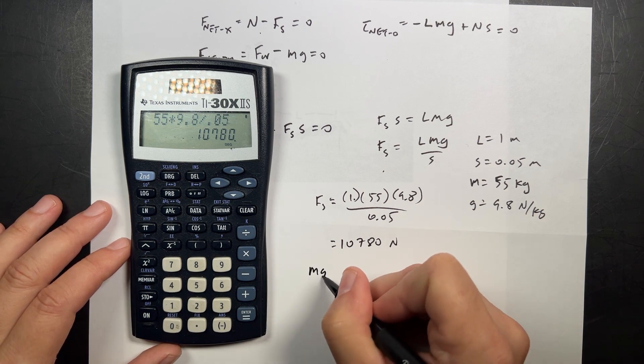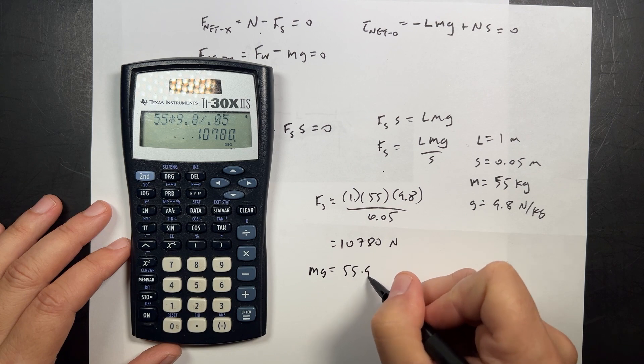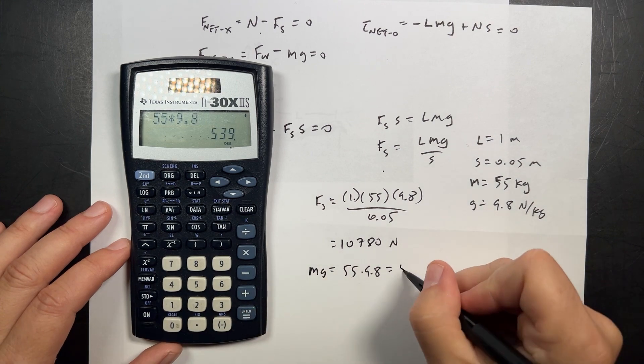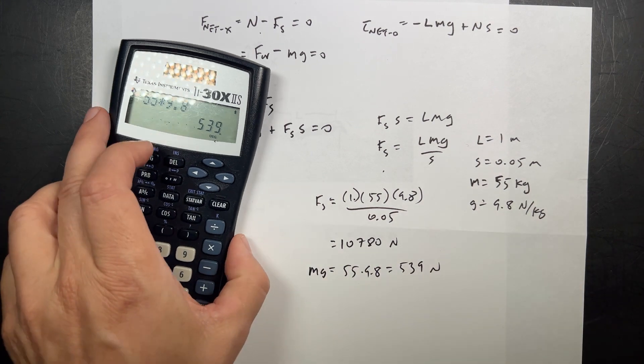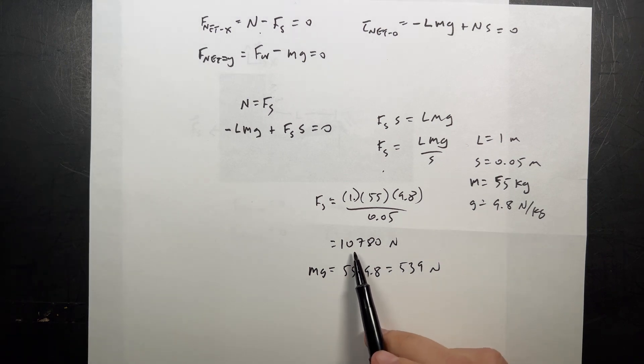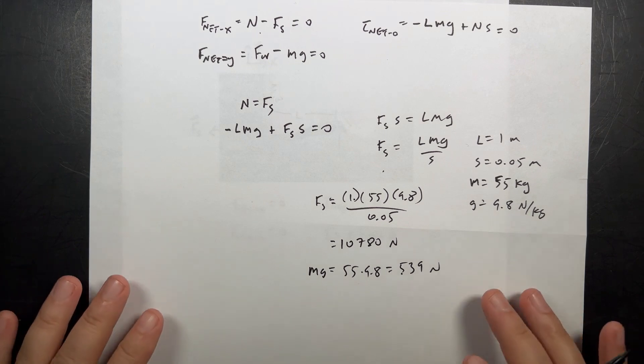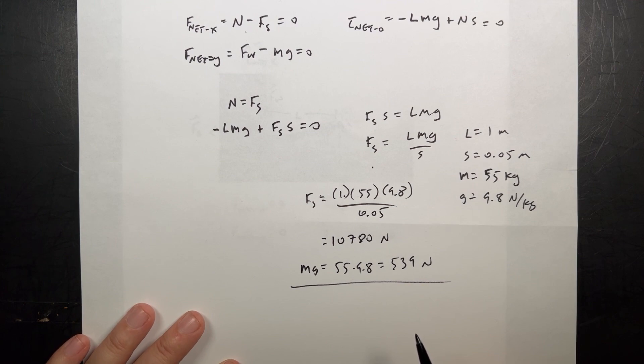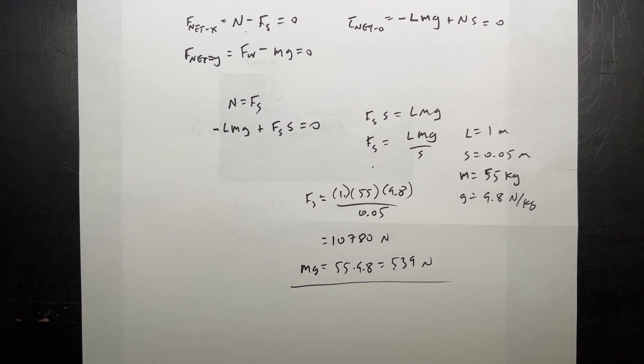Let's compare that to the wall force, mg. mg is going to be 55 times 9.8, which is her weight: 539 newtons. So the spider force is 20 times greater than her weight. It's not real, but it doesn't matter if it's not real. It's still fun, right? But that's what you'd have to do in order to make her stay on the wall like that. The end.